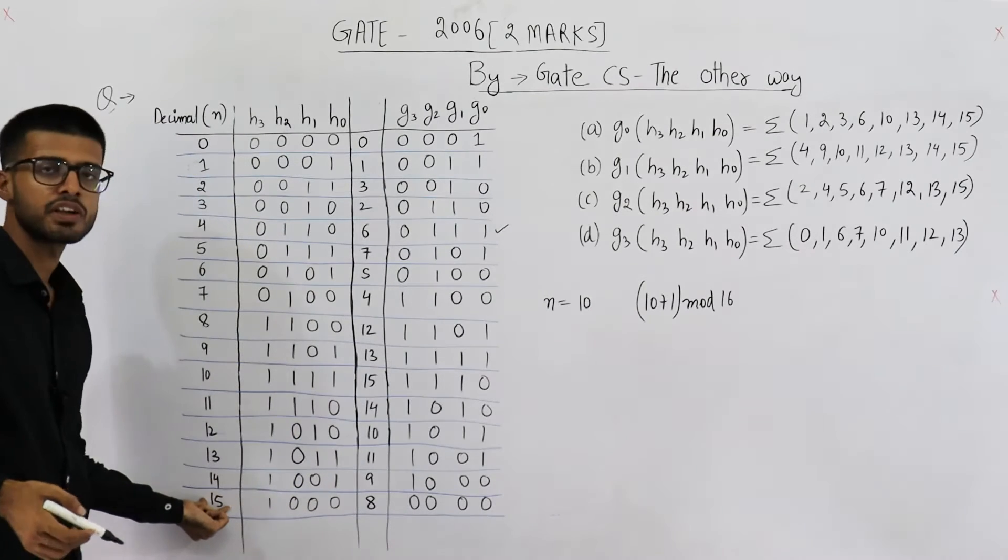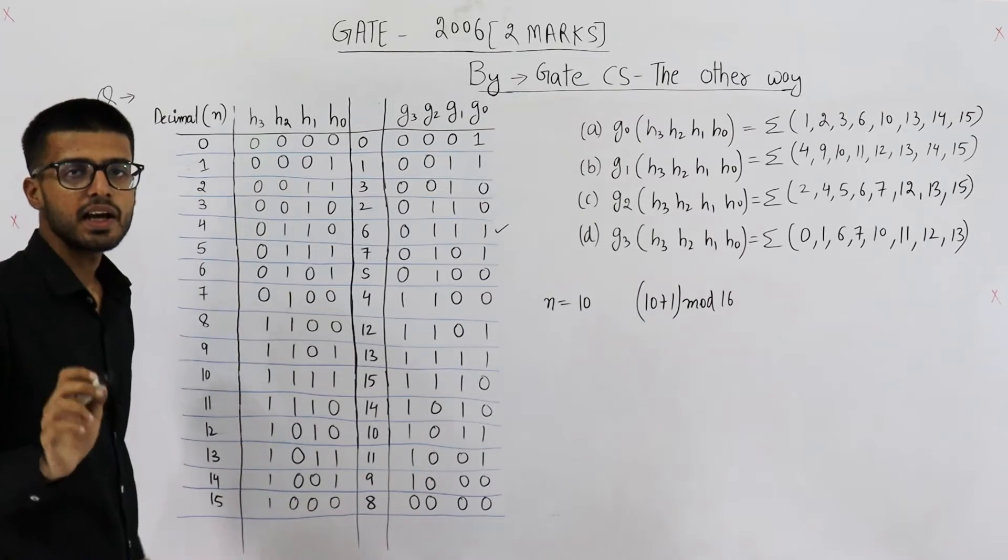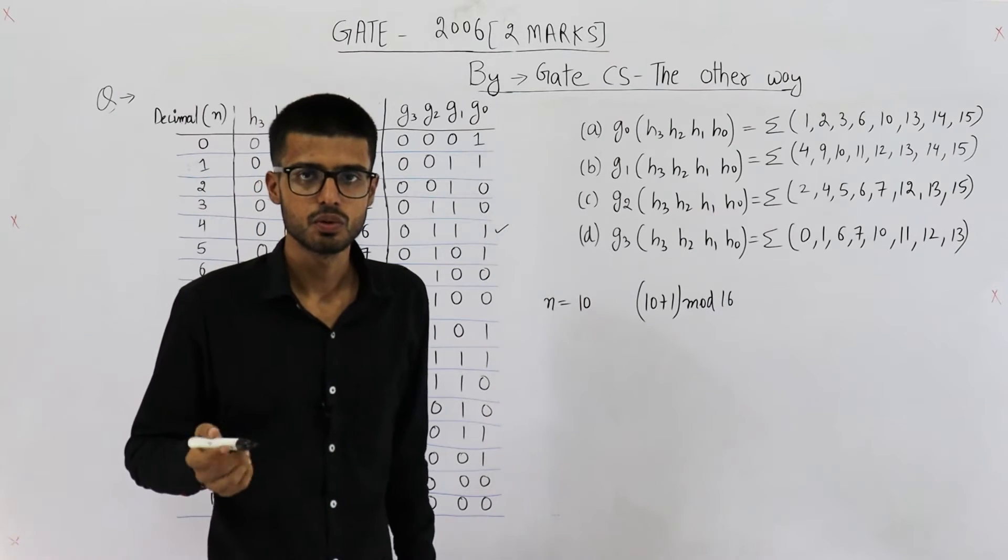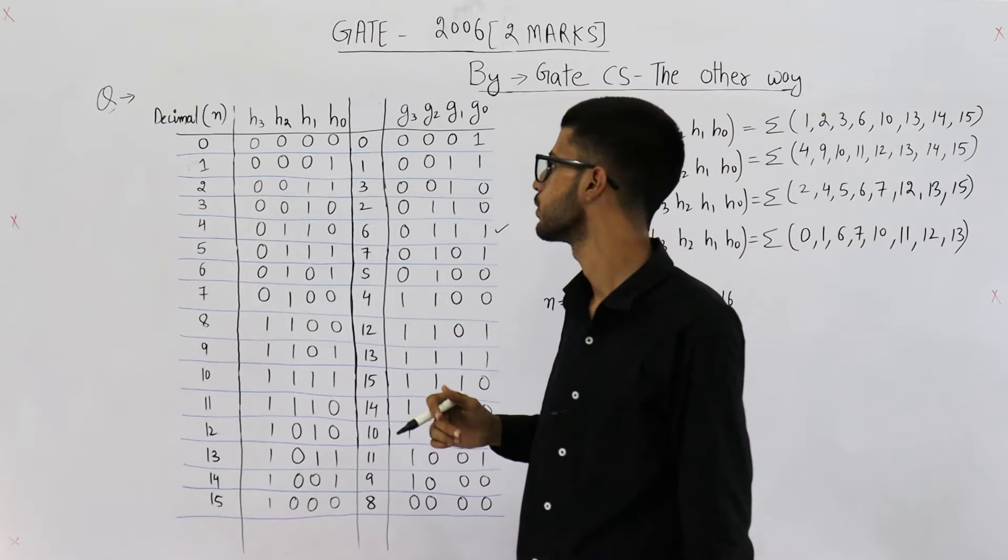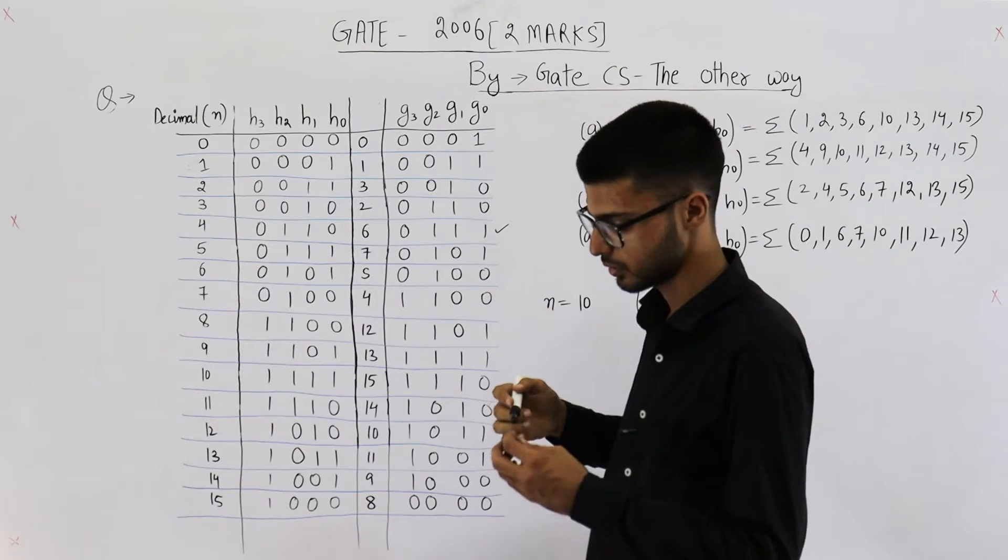That means for n is equal to 10, h is gray code of 10, g is gray code of 11. Similarly, when the value of n is 15, only in this case, g will be the gray code of 0. For rest, all other cases, g is gray code of n plus 1. Because 16 mod 16 is 0.